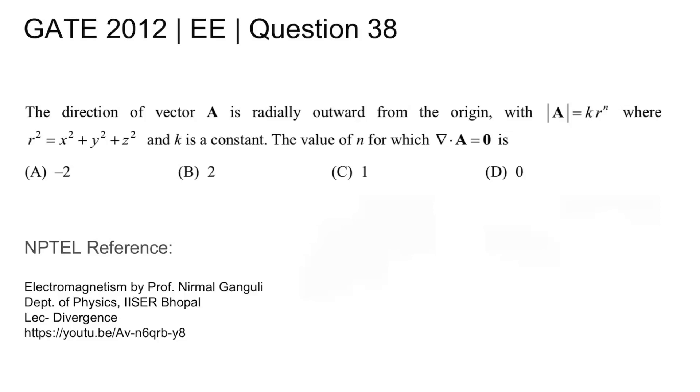This is GATE 2012 electrical question number 38. The direction of vector A is radially outward from the origin with mod A equal to k r to the power n, where r squared equals x squared plus y squared plus z squared, and k is a constant. The value of n for which divergence of A is 0 is being asked.